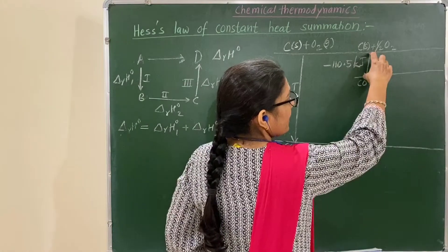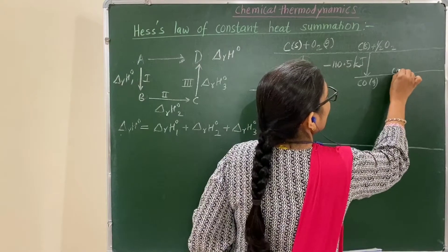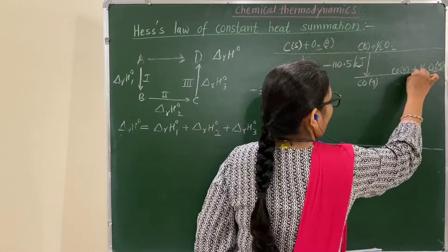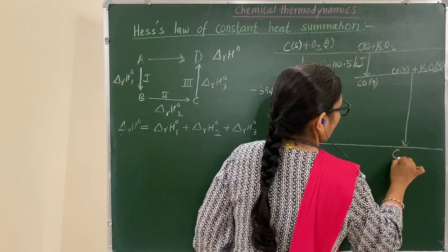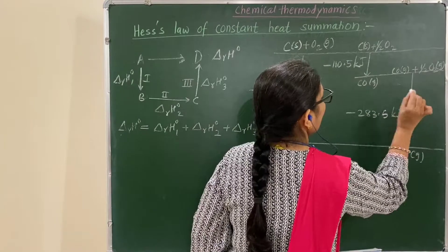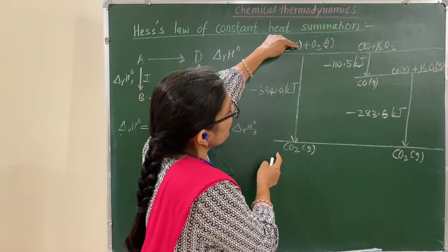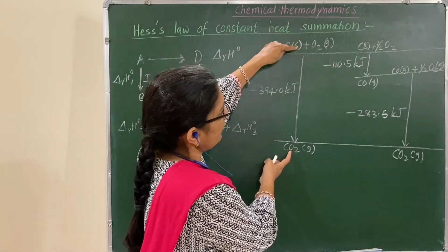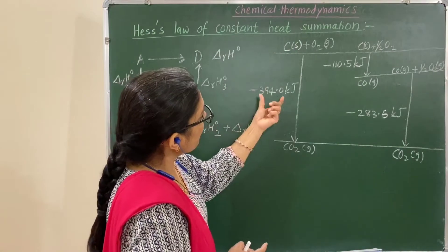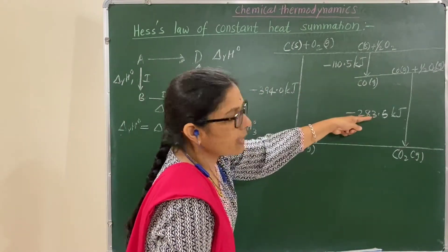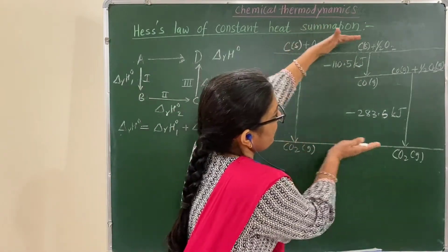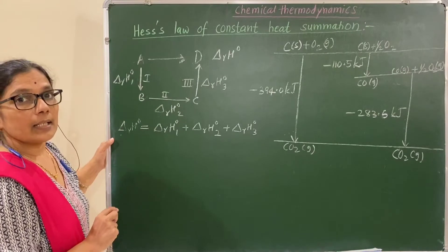Then in the second step, carbon monoxide gas reacts with half O2 to give carbon dioxide, with enthalpy change of minus 283.5 kilojoule. Here the initial state and final state are the same whether the reaction is carried out in one step or two steps. Therefore, the total enthalpy change equals the sum of the two individual steps. The enthalpy change remains the same because enthalpy is a state function — that is Hess's Law.